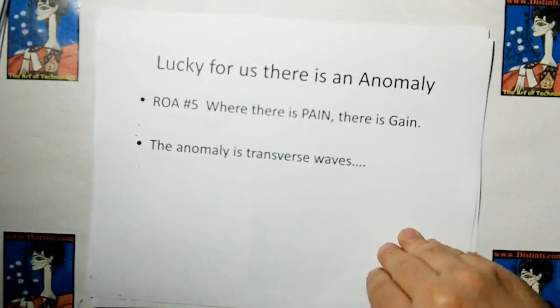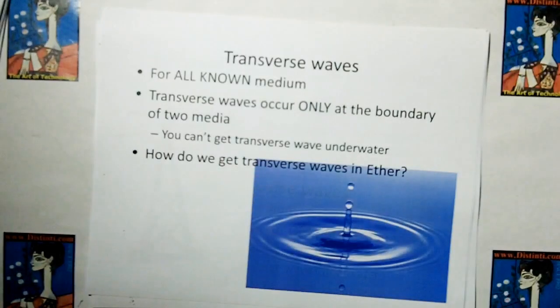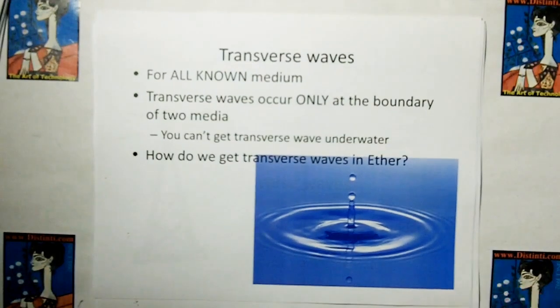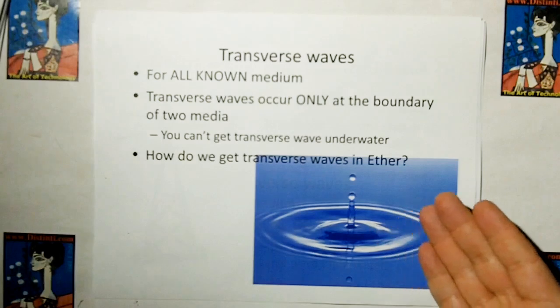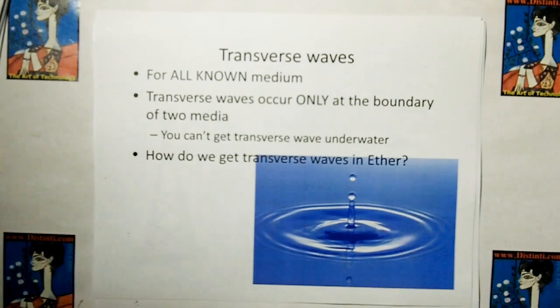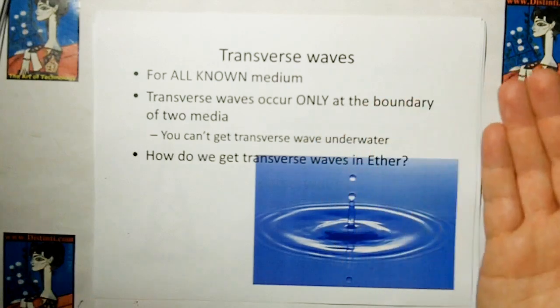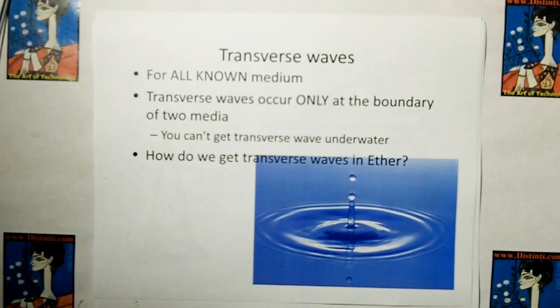Transverse waves, you say. Well, for all known medium, transverse waves only occur at the boundary of two media. For example, transverse water waves occur at the boundary between water and air. Transverse string waves at the boundary of the string in the air.